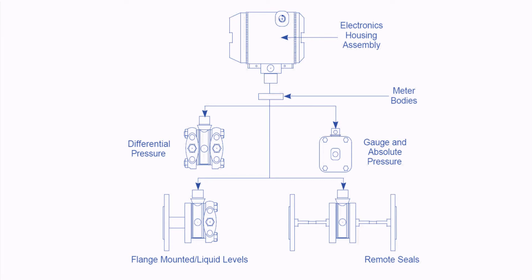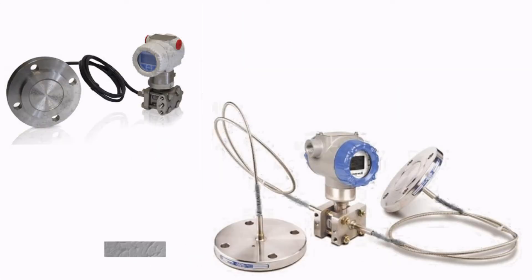First of all, we need to understand the importance of the remote seal. The process fluid entering the pressure transmitter may be hazardous, toxic, poisonous, at high temperature, chemically aggressive, or viscous — all of which can clog the pressure sensor. For these reasons, impulse tubing is not adequate, and we must use remote seal techniques. There are two types: chemical seals and remote seals. Chemical seals are essentially local diaphragm protectors directly connected to the process piping.